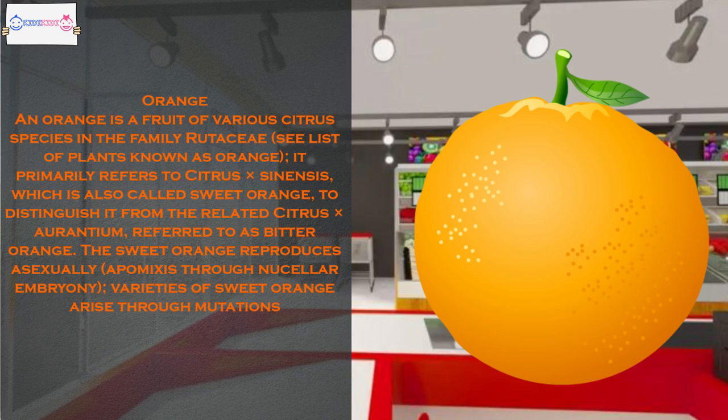An orange is a fruit of various citrus species in the family Rutaceae. It primarily refers to Citrus sinensis, which is also called sweet orange, to distinguish it from the related Citrus aurantium, referred to as bitter orange. The sweet orange reproduces asexually through apomixis via nucellar embryony; varieties of sweet orange arise through mutations.